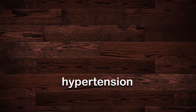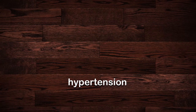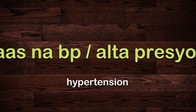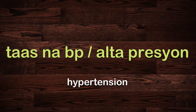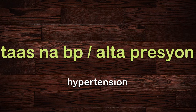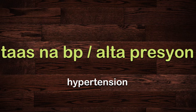Hypertension — there's two ways to say this. You can say taas na blood pressure, or taas na BP. Or you can also say alta presyon. So there's two for hypertension: taas na BP, or you can use alta presyon.